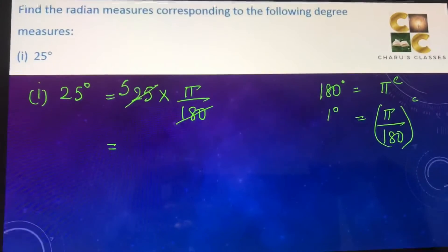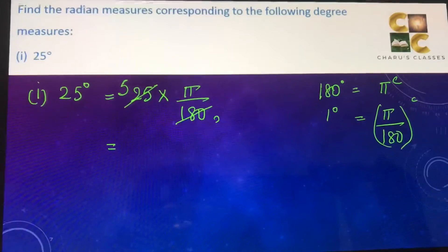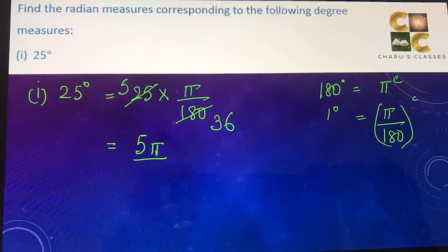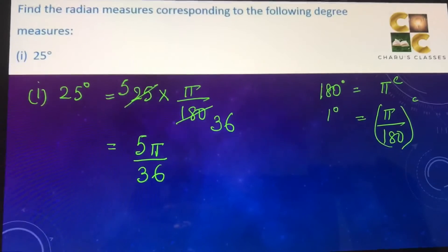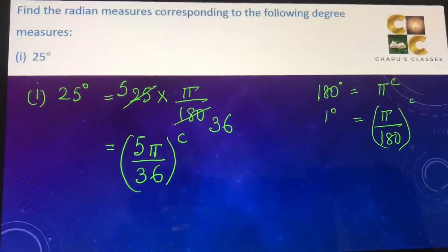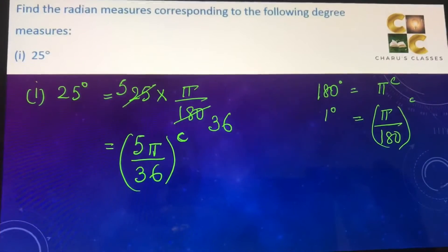So we have 5π by 36. Therefore, 25 degrees is 5π by 36 radians.